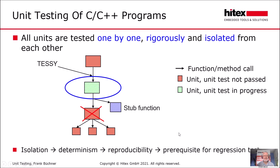There is also isolation to the called function. In case our unit calls other units, they are replaced by so-called stop functions, meaning everything outside the blue line is under our control during testing. This isolation also allows for determinism — a unit test returning a certain result today should return the same result in a fortnight because we have everything under control. This means unit tests are reproducible, which is a prerequisite for regression testing, where already passed test cases are repeated to see if a bug fix caused any trouble.